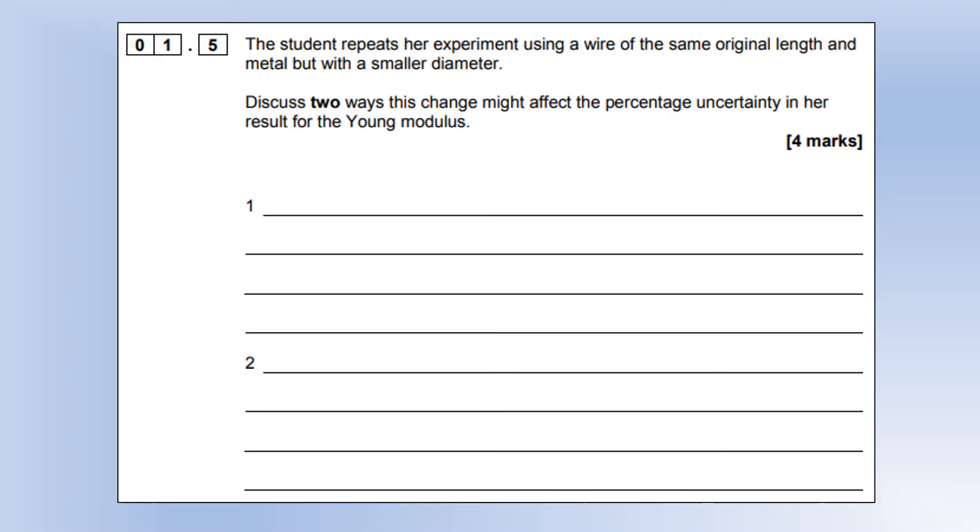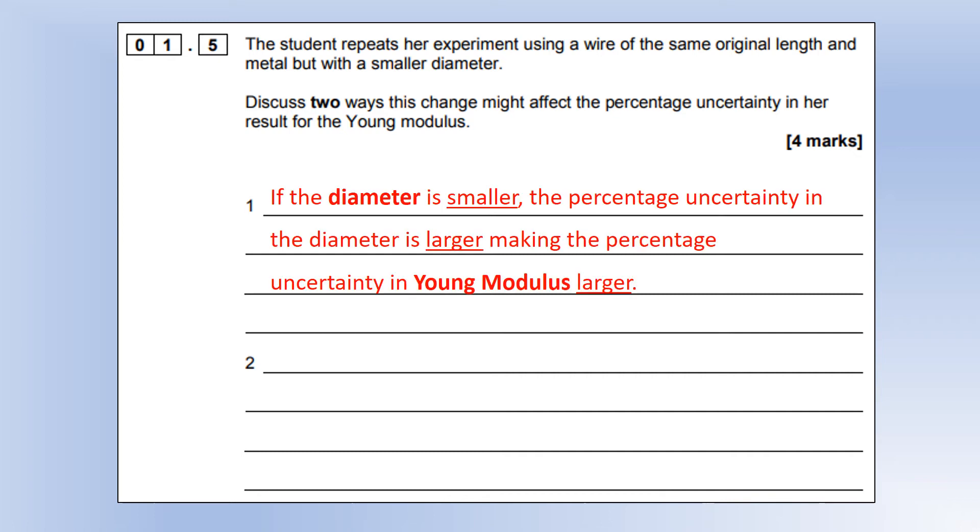The student repeats her experiment using a wire of the same original length and metal but with a smaller diameter. Discuss two ways this might change the percentage uncertainty in the Young's modulus. The first, more obvious way: if the diameter is smaller, the percentage uncertainty in the diameter is larger, making the percentage uncertainty in the Young's modulus larger.